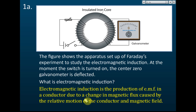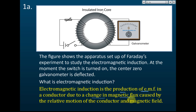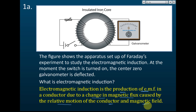The production of EMF is due to a change in magnetic flux, caused by the relative motion of the conductor and magnetic field — meaning we use the conductor to cut the magnetic field. There are three important points: (1) production of EMF, (2) change in magnetic flux, and (3) relative motion of conductor and magnetic field.